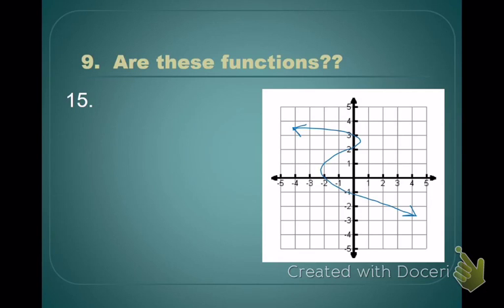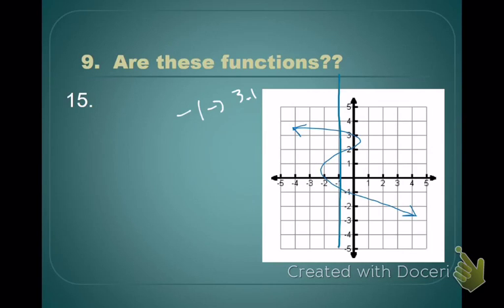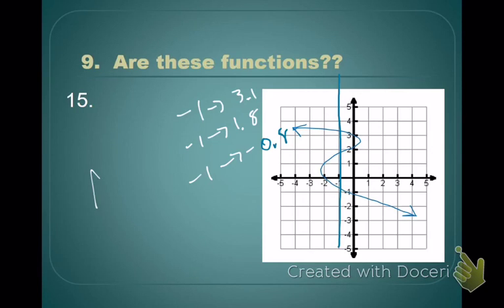What does it mean if the vertical line hits twice? If I draw a vertical line through negative 1, then my input is negative 1, and everywhere it hits the graph shows an output mapped to negative 1. It might hit at 3.1, then again at negative 1.8, then again at negative 0.8. That's too many outputs for one input, so this is not a function. The vertical line hit the graph in three spots, and it can only hit it in one spot. That's your vertical line test.